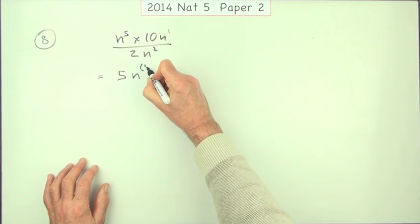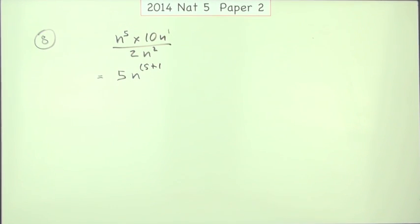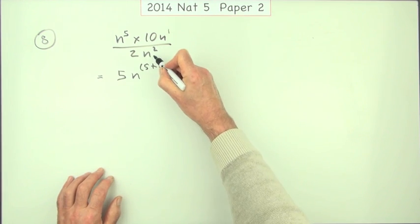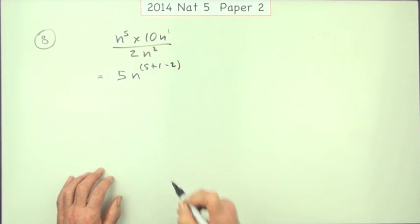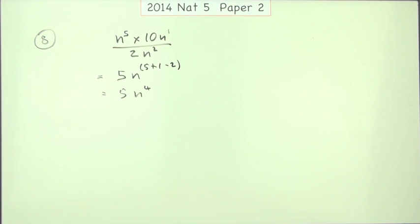The only working I can think of putting down would be to say well if I'm multiplying I'll add them, so I'll show that by putting five plus one. If I'm dividing I'll subtract it, so take away two. Then I get five n to the power four as before.